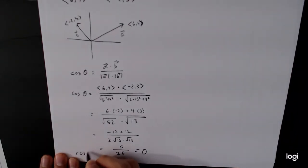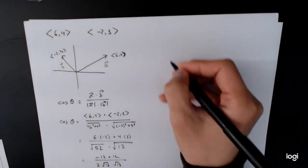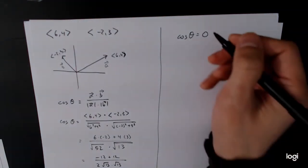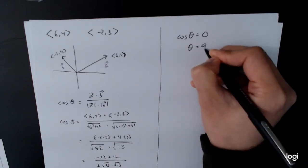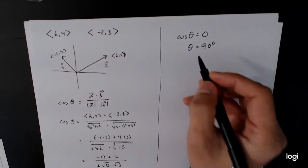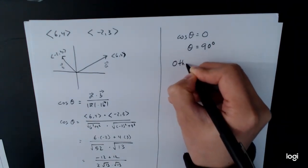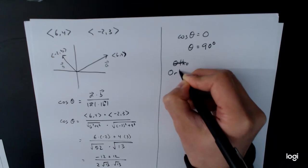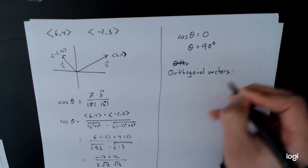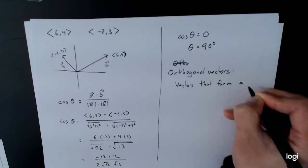So cosine of the angle between them is equal to 0. We want the angle between 0 and 180 degrees, so we conclude that theta equals 90 degrees — that's where cosine equals 0 on that interval. Now we have a term for this: if the angle between two vectors is 90 degrees, we call them orthogonal vectors — vectors that form a 90-degree angle between them.